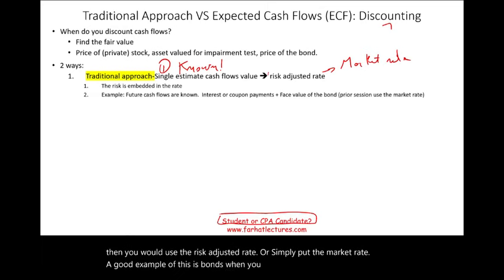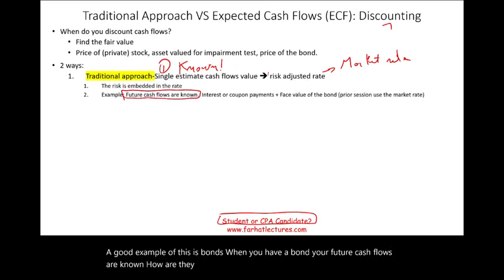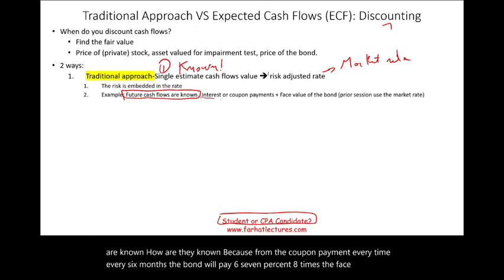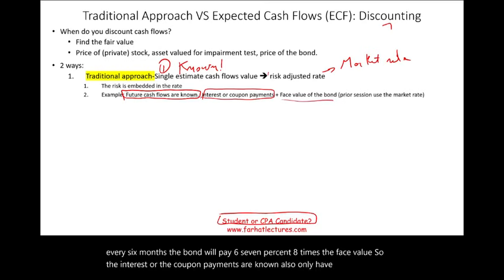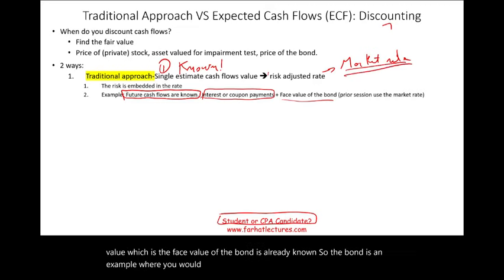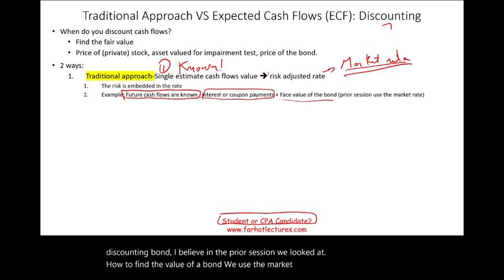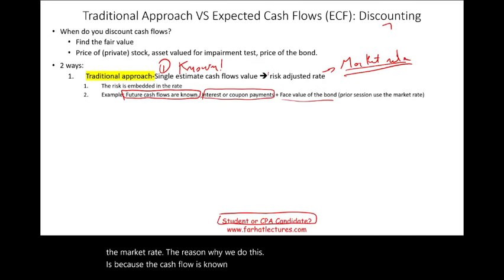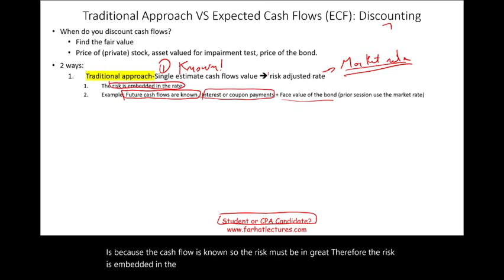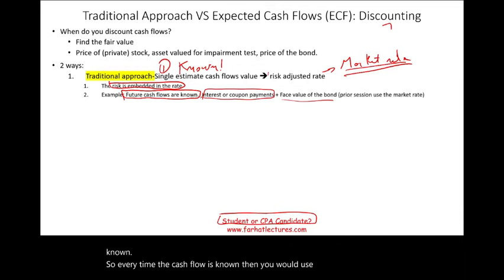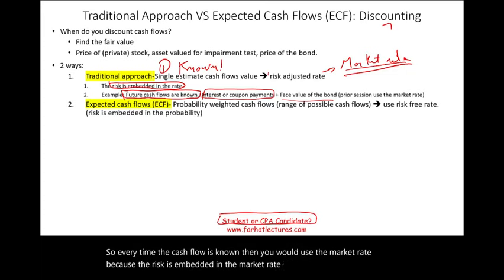When you have a bond, your future cash flows are known. From the coupon payment, every six months the bond will pay 6%, 7%, or 8% times the face value. So the coupon payments are known, and the face value of the bond is already known. The bond is an example where you use the market rate. The reason we use the market rate is because the cash flow is known, so the risk must be in the rate — it is embedded in the rate, not in the cash flow. So every time the cash flow is known, you use the market rate because the risk is embedded in it.